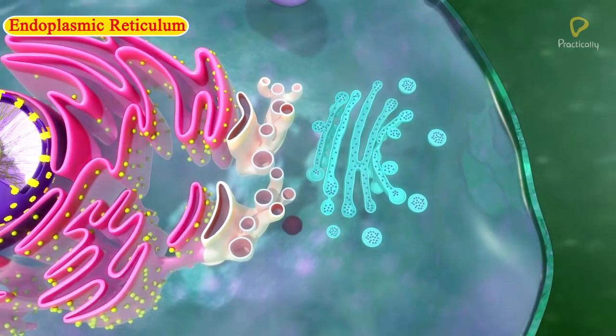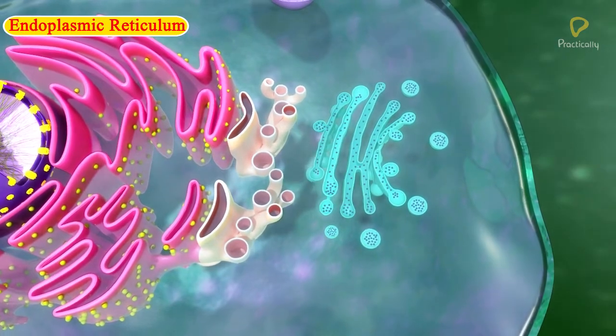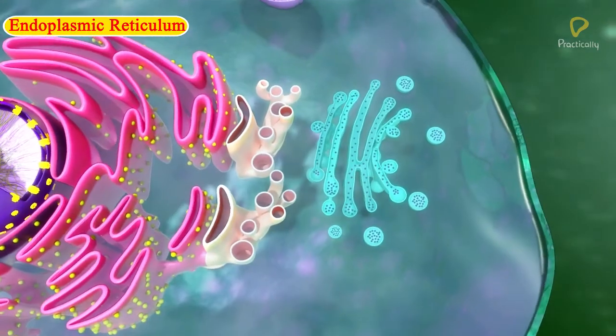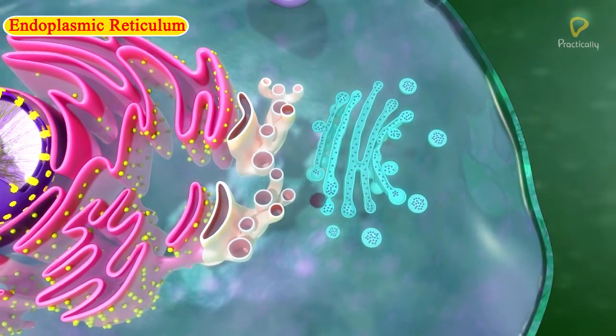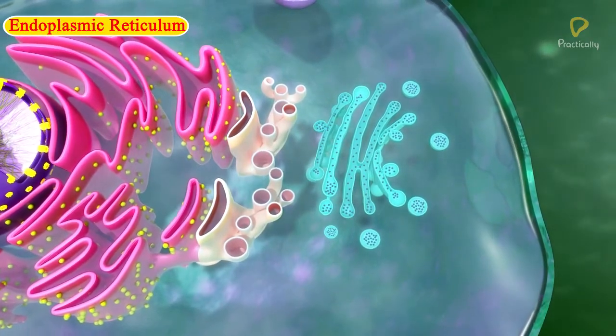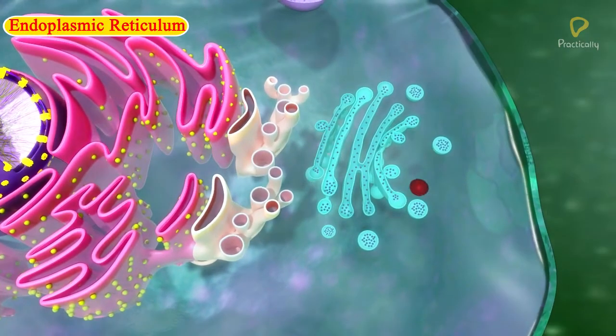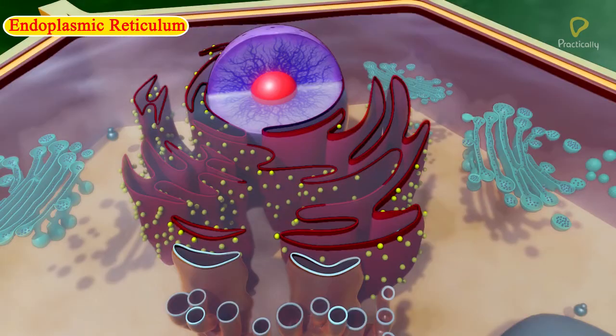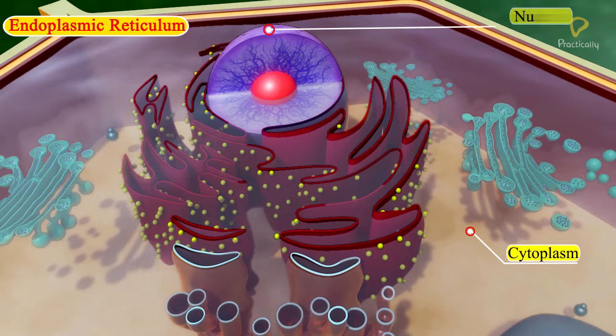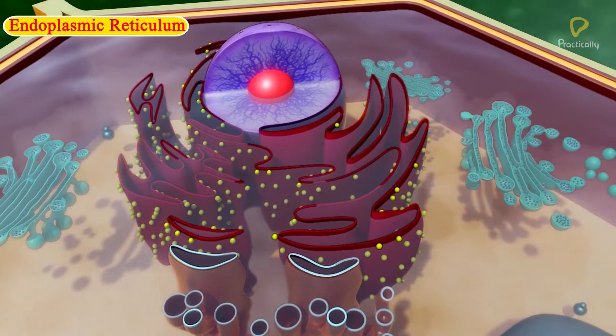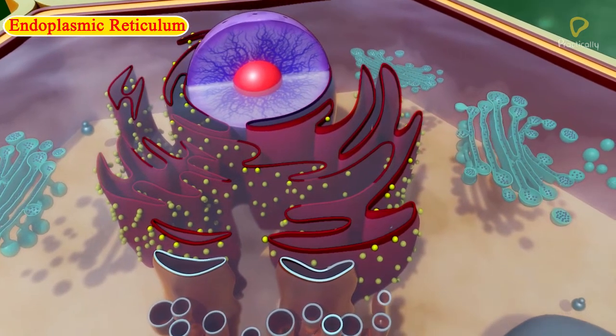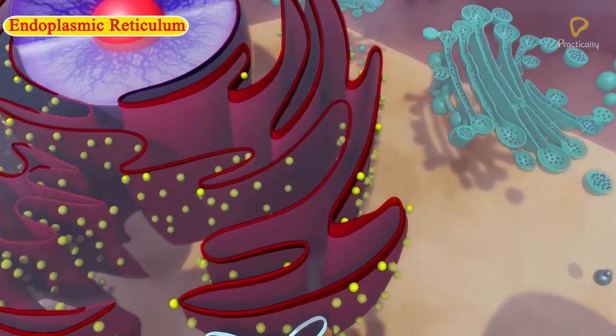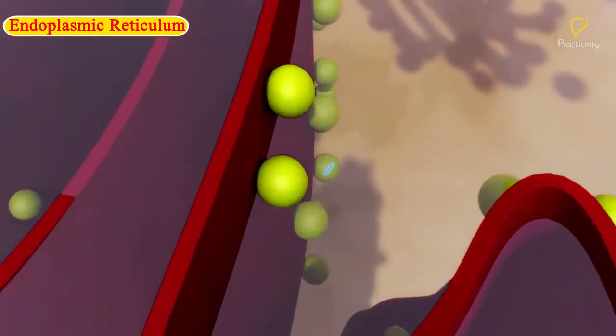Although the endoplasmic reticulum varies greatly in appearance in different cells, it always forms a network system. Thus, one function of the endoplasmic reticulum is to serve as channels for the transport of materials, especially proteins, between various regions of the cytoplasm or between the cytoplasm and the nucleus. The endoplasmic reticulum also functions as a cytoplasmic framework, providing a surface for some of the biochemical activities of the cell.